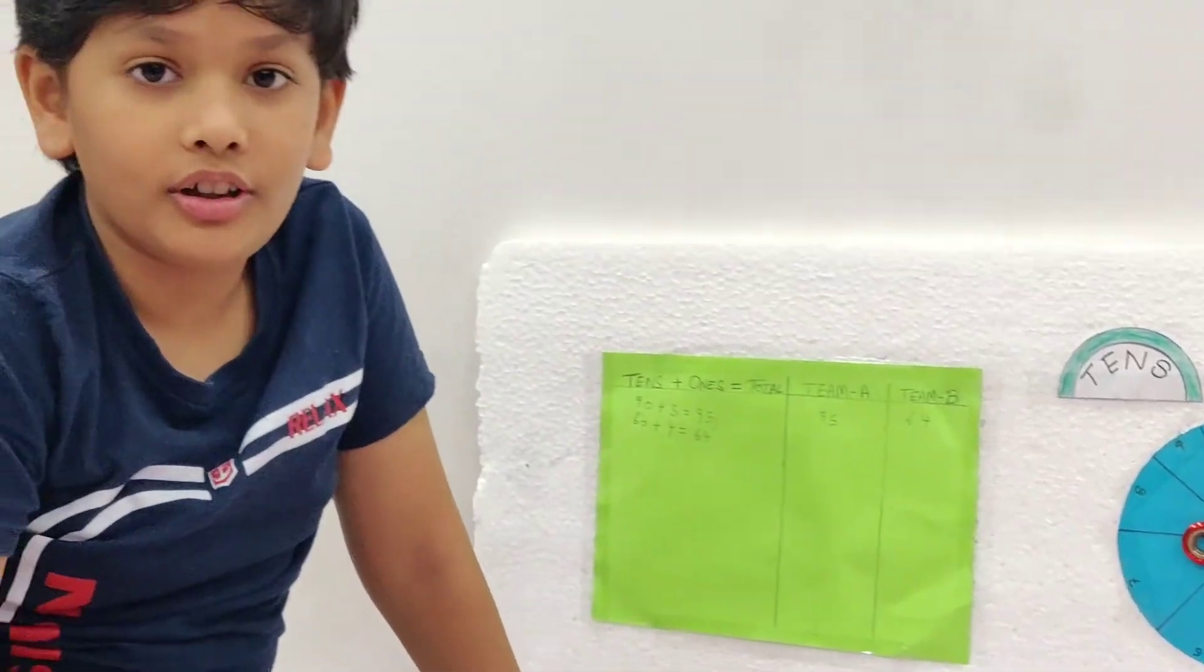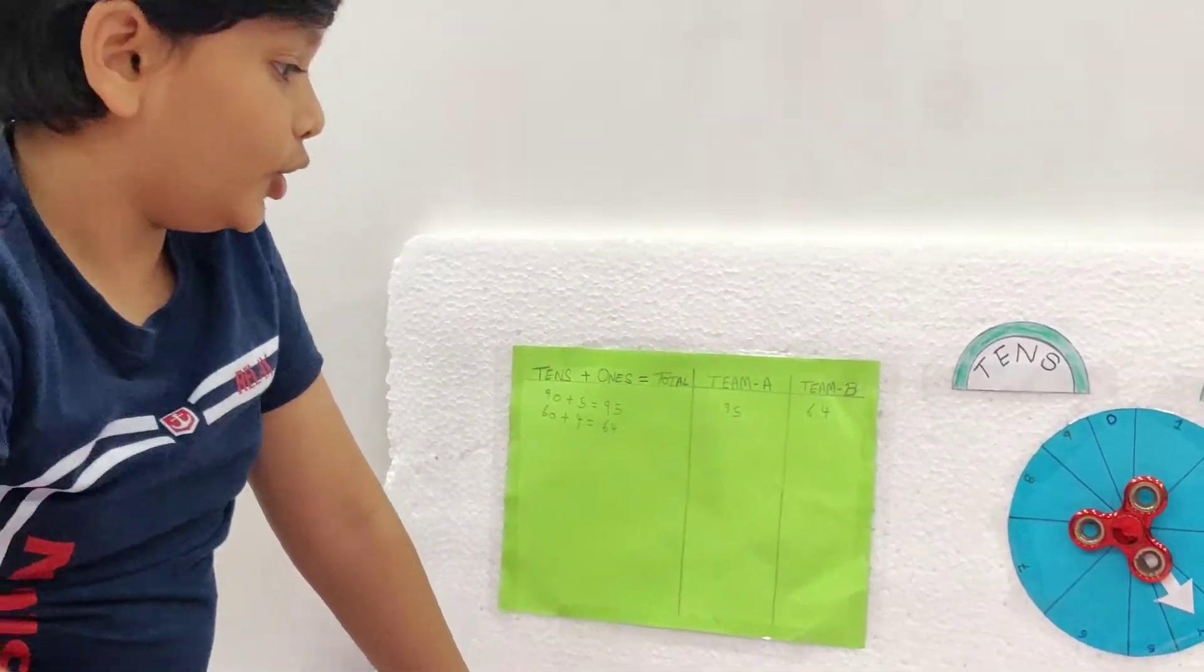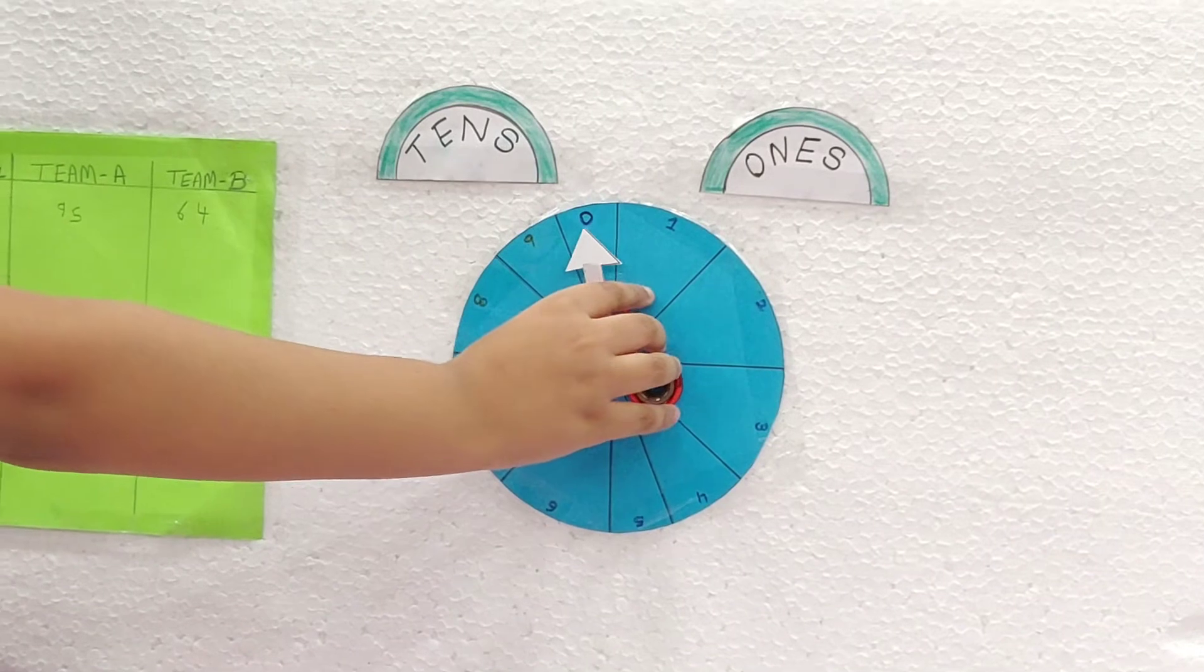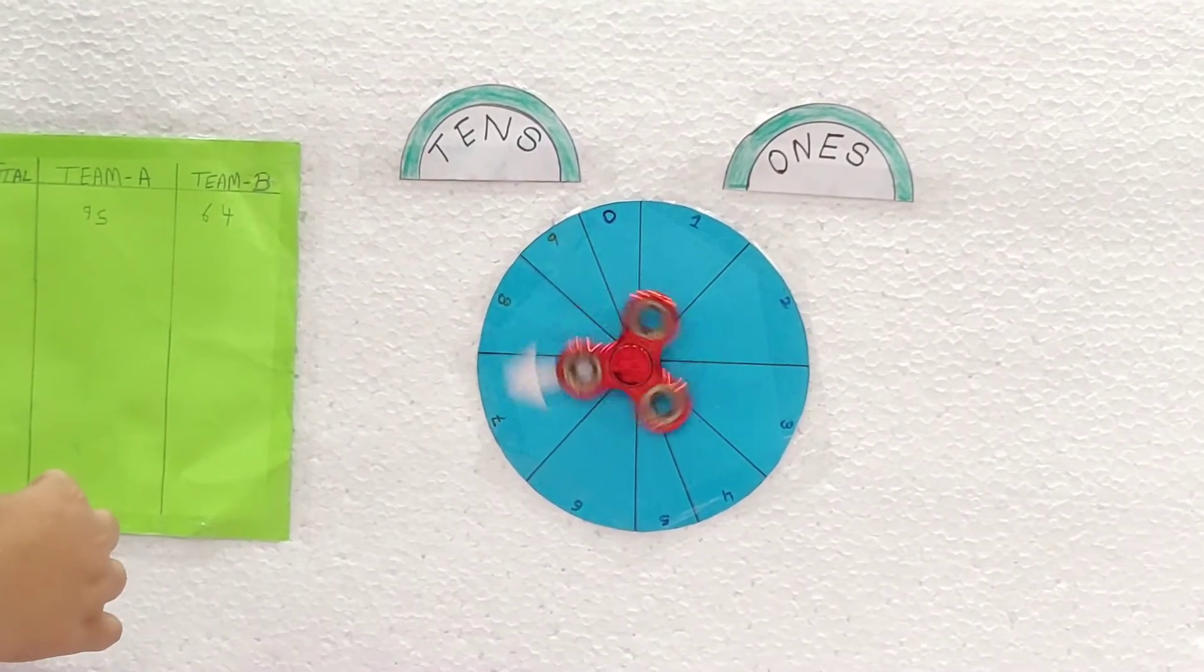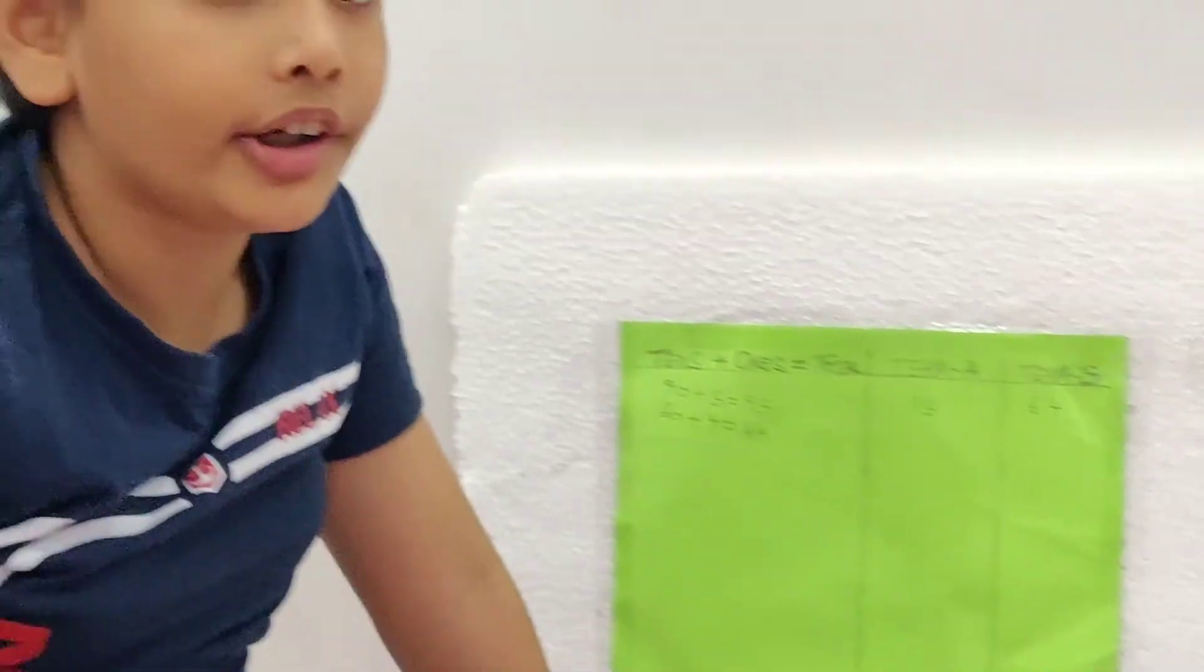So the points B team gets is 64 points. We will write 64 here also. Let us play one more round. I love this game. So we will spin the wheel again.